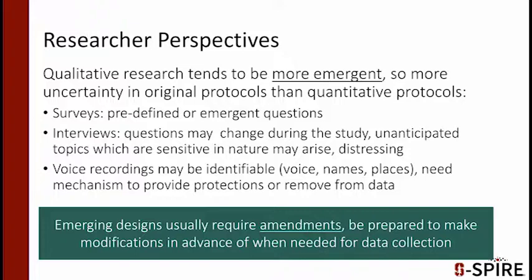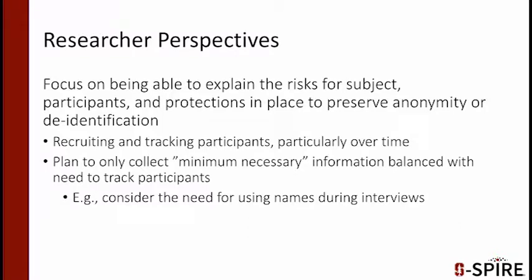When thinking about recruiting participants, focus on being able to explain the risks for the subjects and the protections in place that preserve anonymity as much as possible. This includes a de-identification process. You should consider having a system in place for recruiting and tracking participants, particularly over time or for follow-up, which is likely in a mixed methods study. Plan to only collect the minimum necessary information, balanced with the need to track participants over time. Consider how much you need to use names during interviews, or whether you can use a pseudonym or have a de-identification process in place.